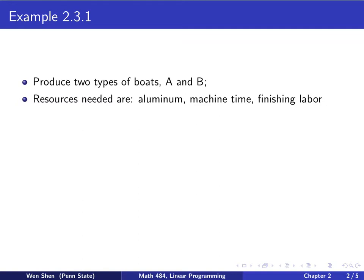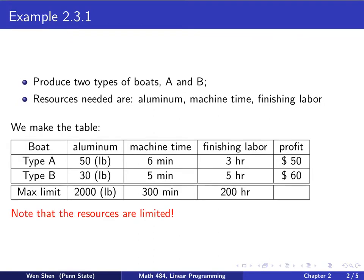We now take example 2.3.1 in the textbook. In this example, we are going to produce boats, and there are two types of boats, type A and type B. And there are various resources needed in this production. Let's focus on the following. They are made of aluminum, and each of them will take a certain machine time to do it. And then once the machine is done with it, it needs finishing, like painting or whatever. There is finishing labor involved.